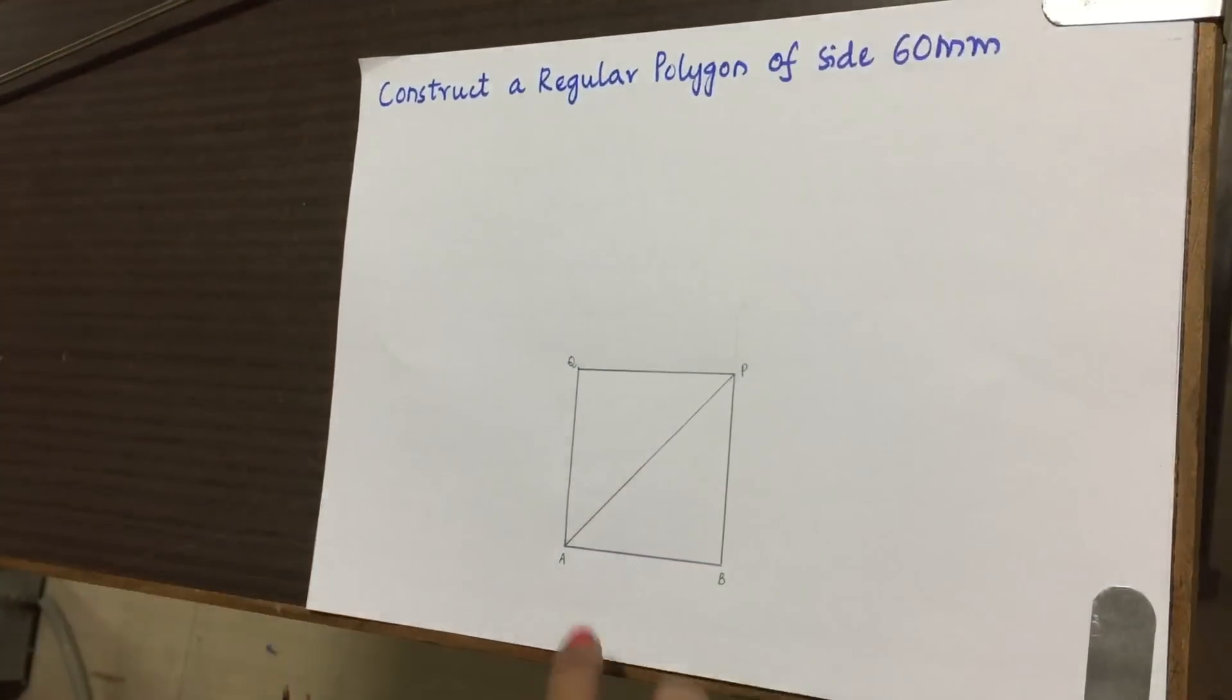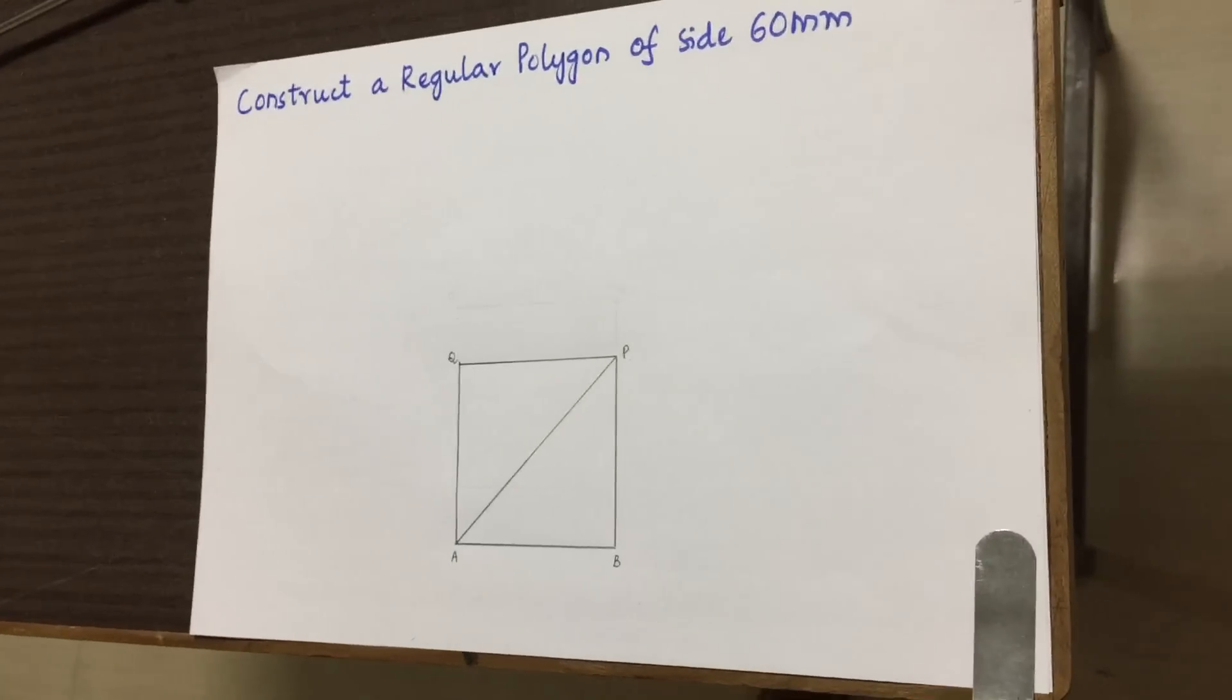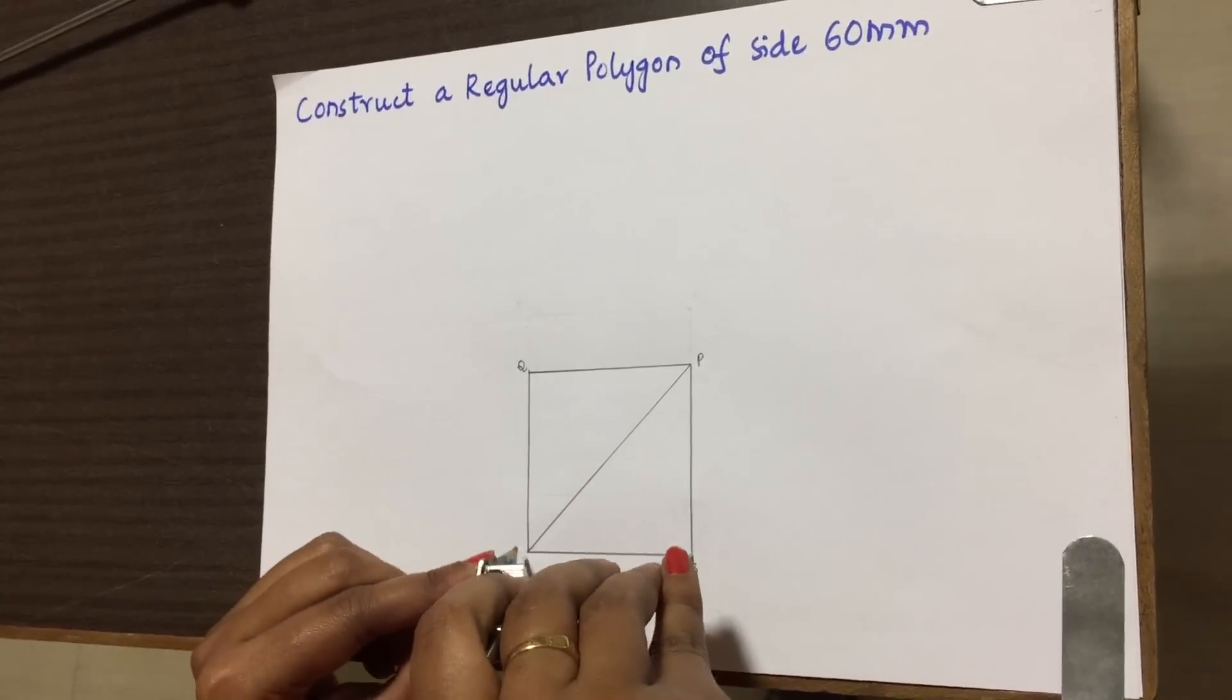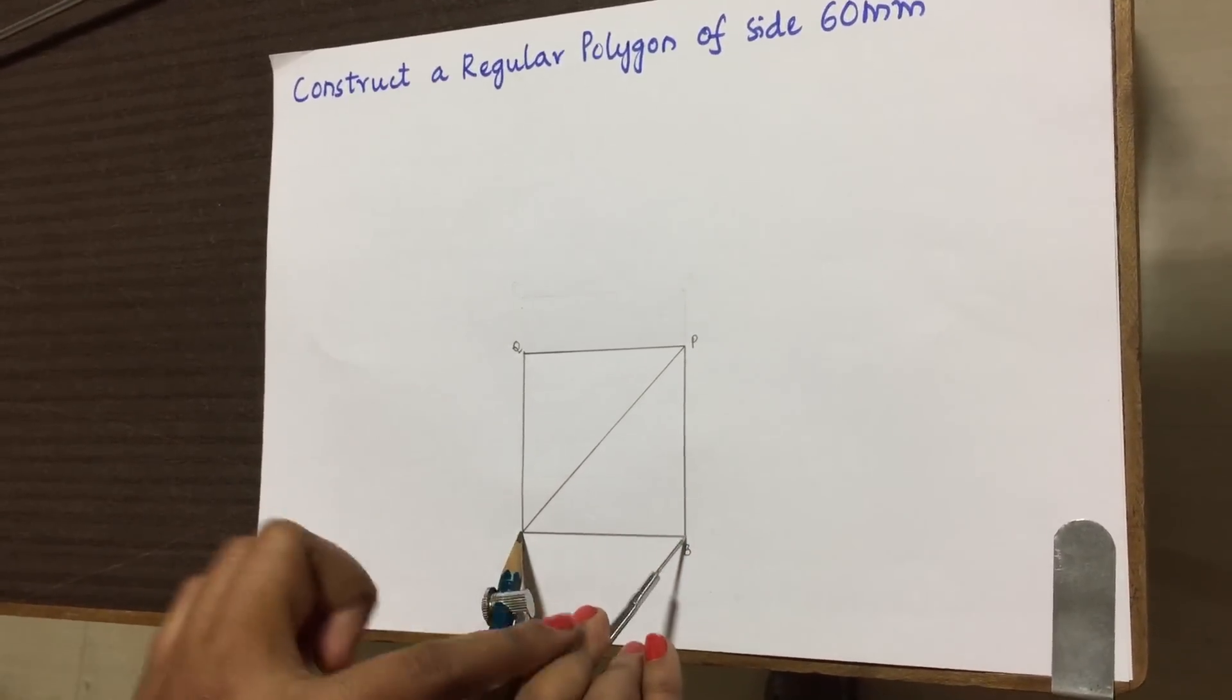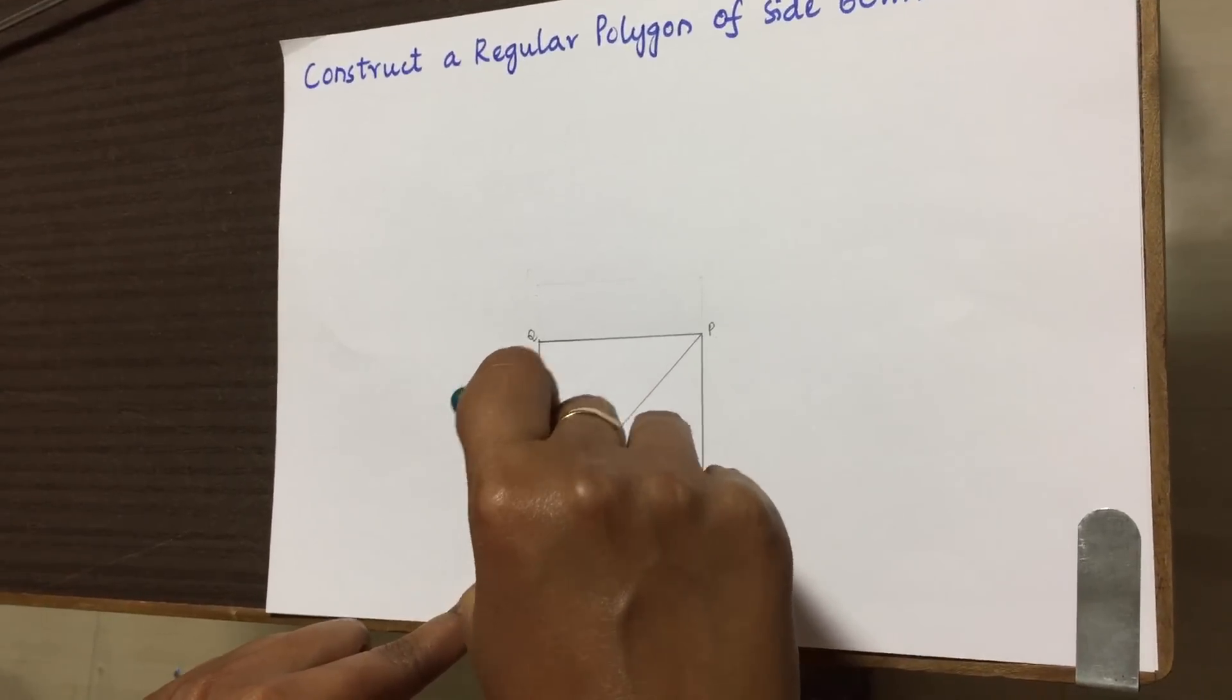After this I have to draw a diagonal arc between the points A and P. For that with B as center and AB as radius, draw an arc.